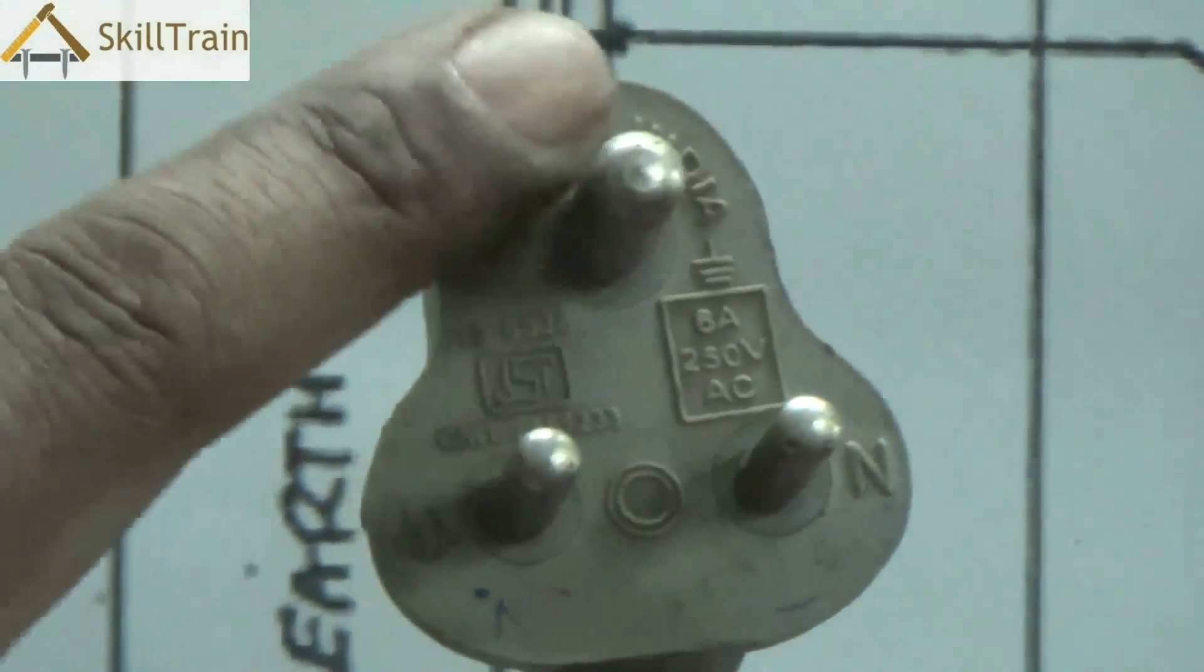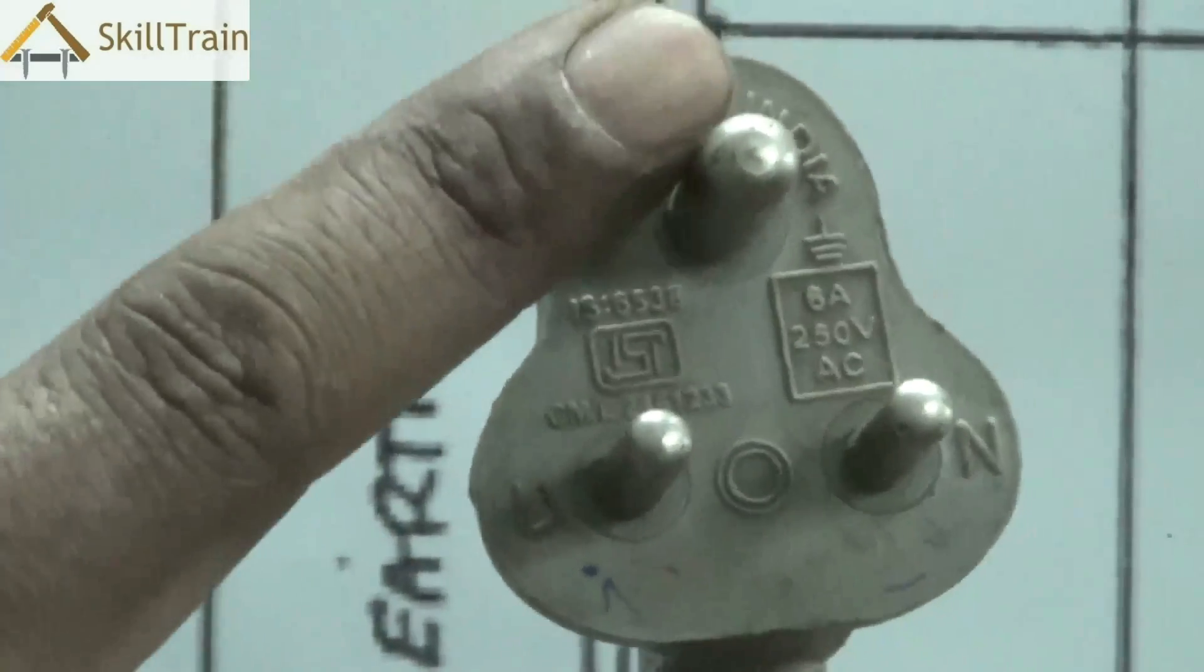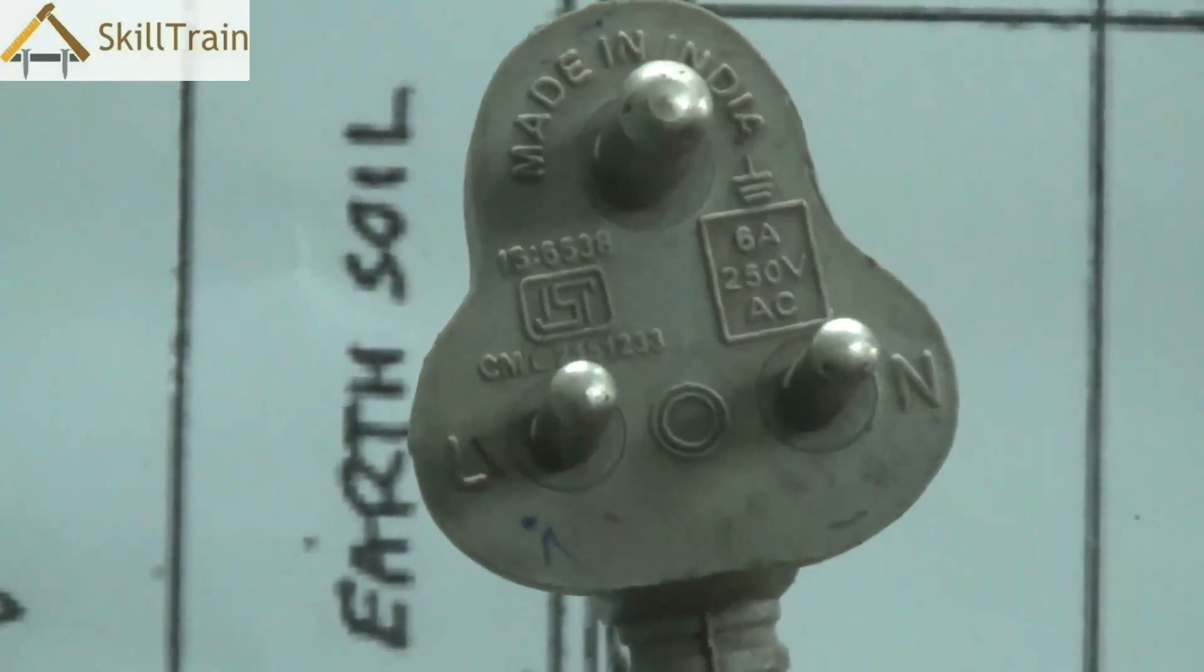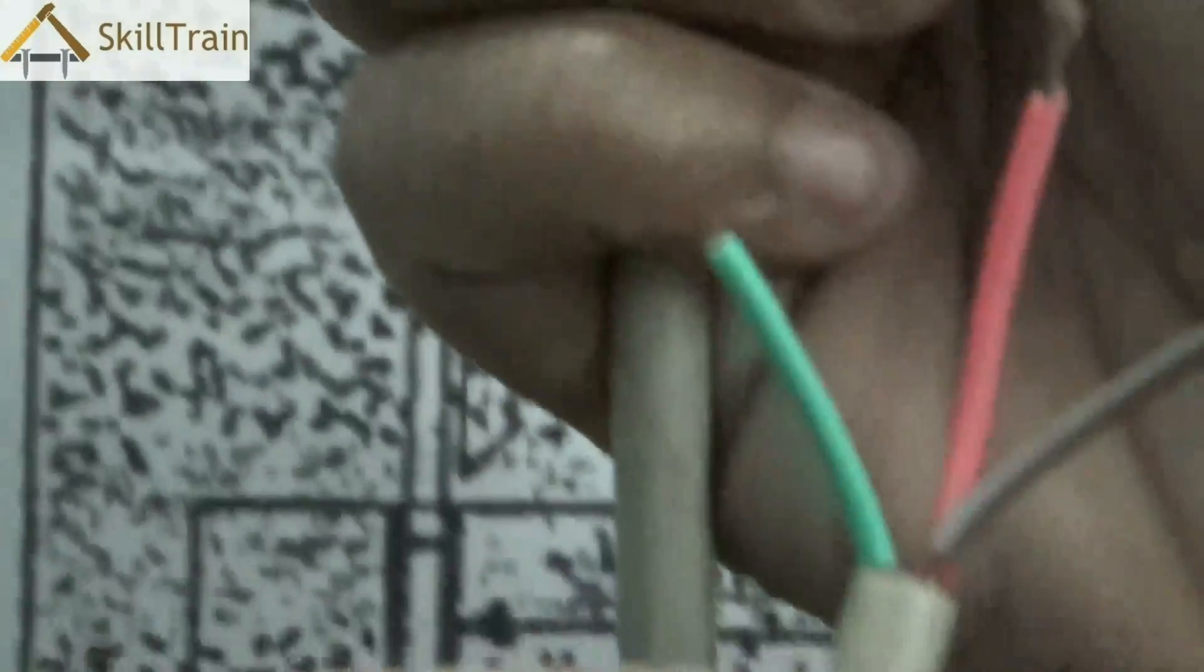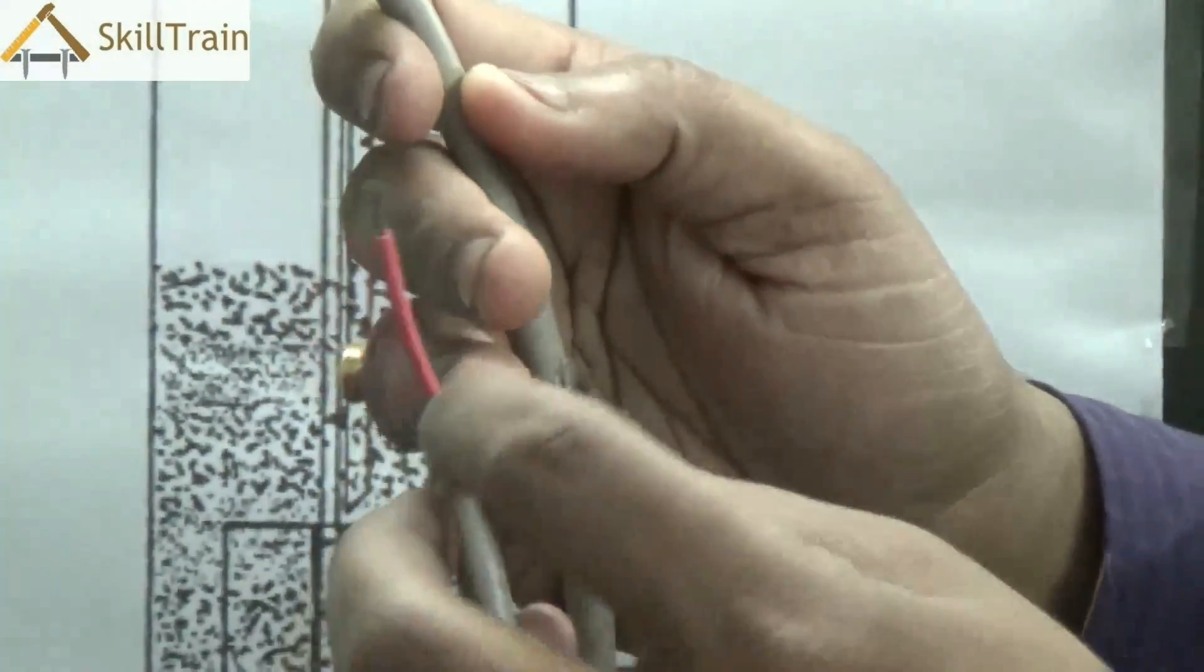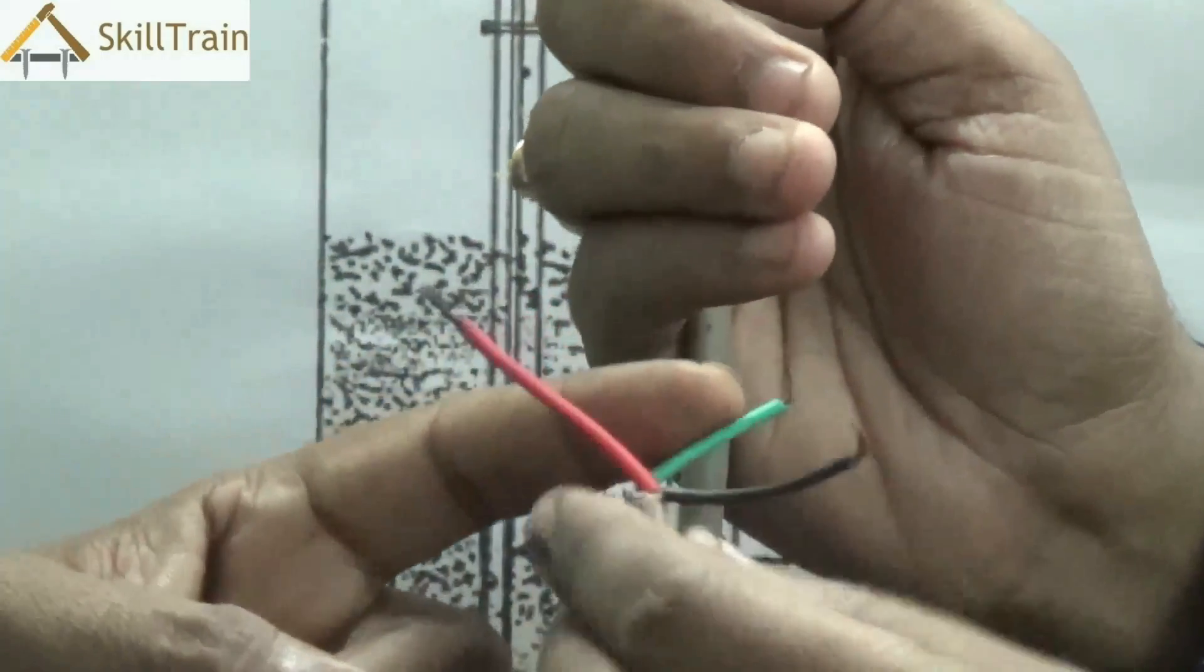Now in order to ensure that such shock is not passed on to human body, you connect that particular point or connect the body to the earth thereby directing any leakage current back to the earth surface.